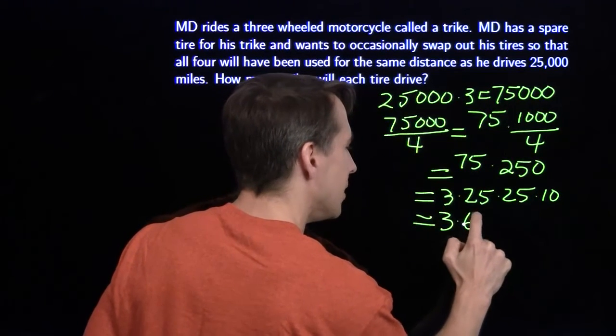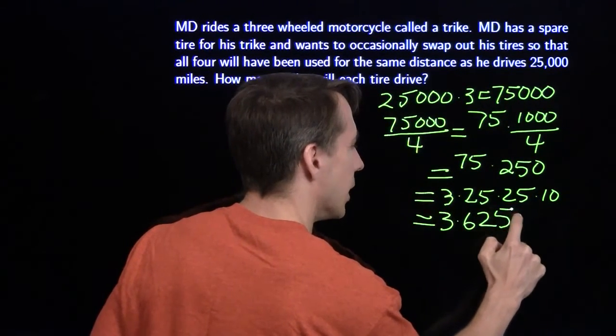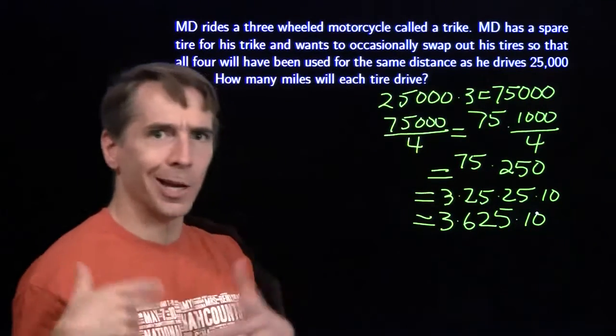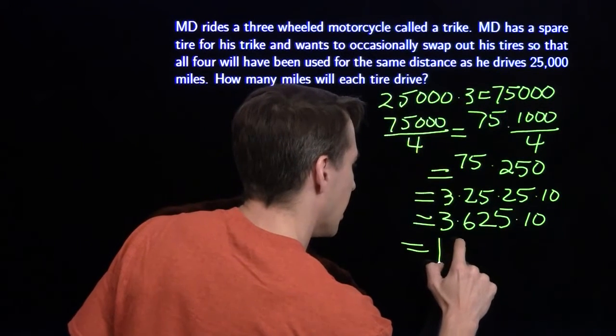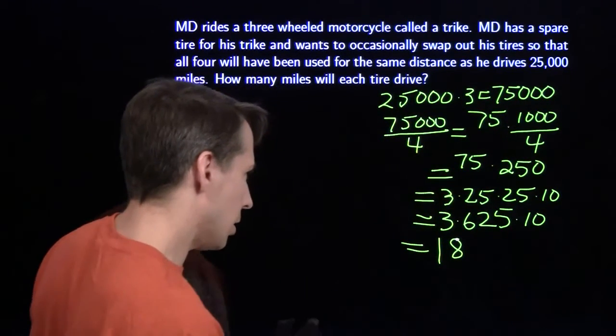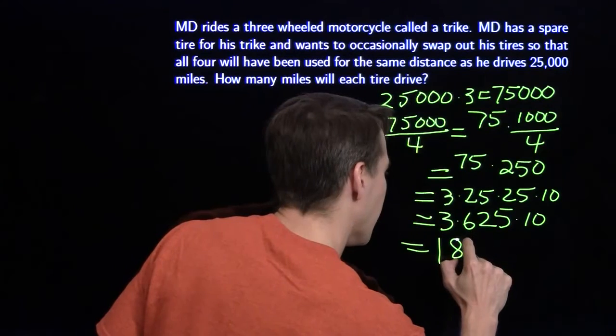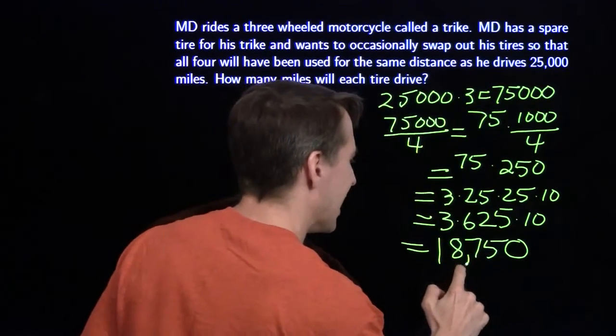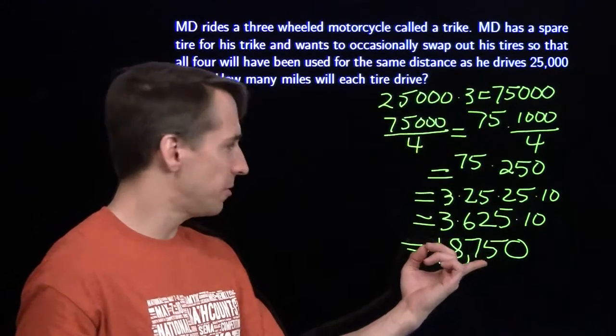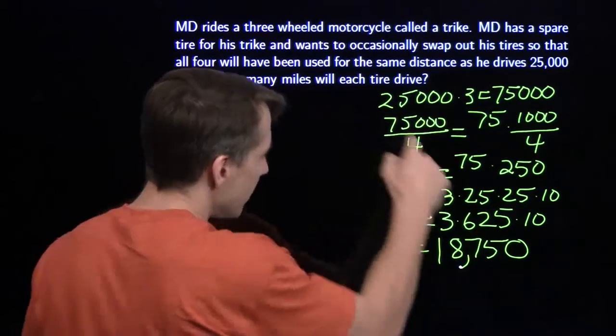I don't want to multiply that out, but I do know that 25 times 25 is 625. So I'm going to split this up. I'm going to call this 3 times 25 times 25 times 10. I'm strategically lazy. I go with the computations I know how to do. 3 times 600 is 1,800. And then we got 3 times 25 is 75. And then I'm going to multiply by the 10 there. So I've got 18,750 miles per tire.